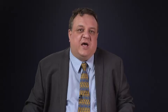So what does the Penn Treebank tag set look like? The next two slides show the different tags for parts of speech. CC stands for Coordinating Conjunction, such as the word AND. CD is a cardinal number, for example 1. Determiner, like 'the', is marked as DT.